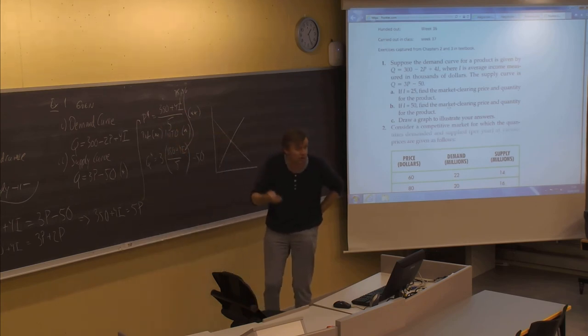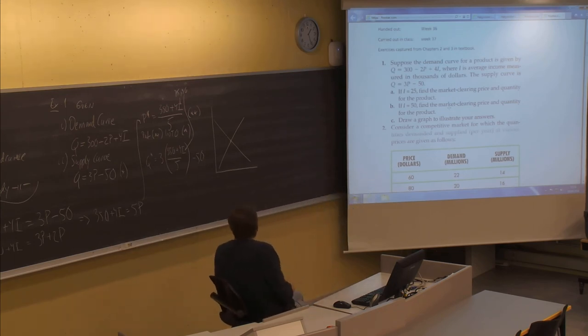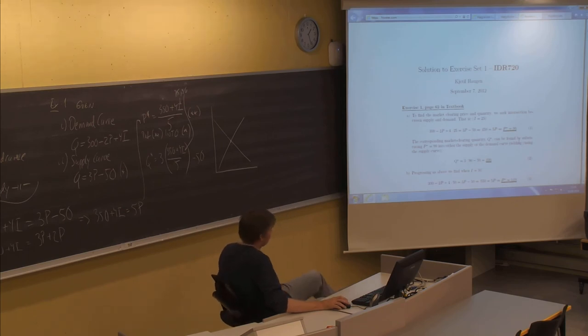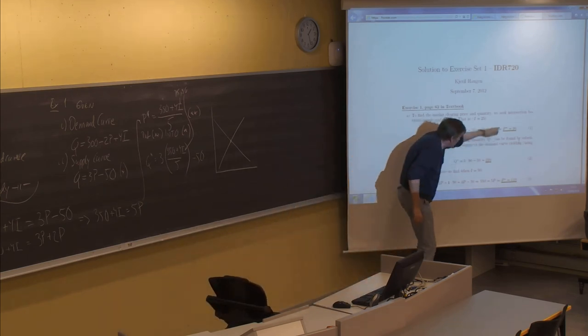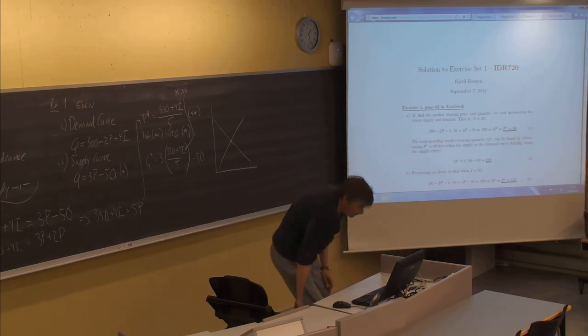If you look at the solution here, I've done it differently. I start by just entering I equals 25. Then I get 300 minus 2P plus 4 times 25 equal to the supply curve 3P minus 50. Then I solve for P and I get the P value of 90. I just then do the same structure. I put it back into the supply curve with P equals 90, and then it's 3 times 90 minus 50. You end up with this first equilibrium point of P equal to 90 and Q equal to 220.